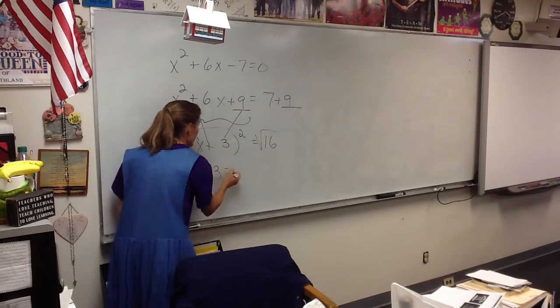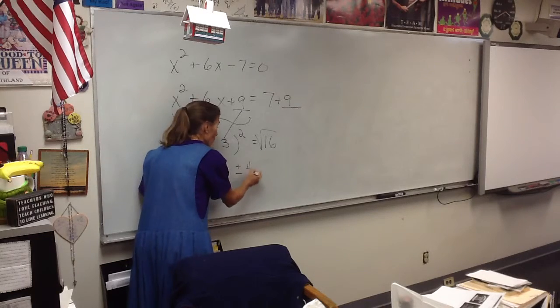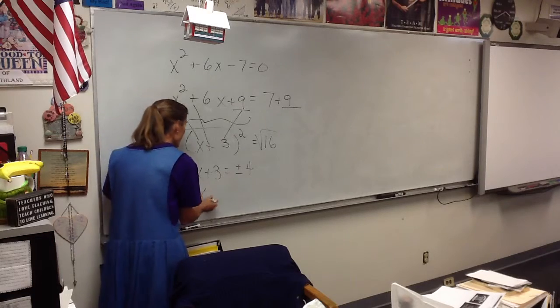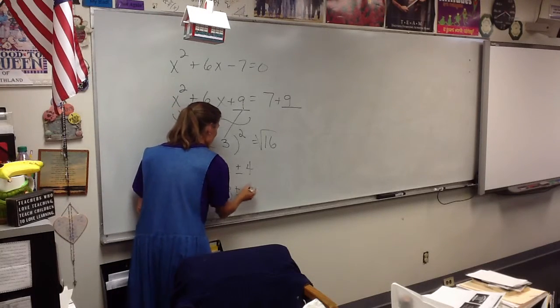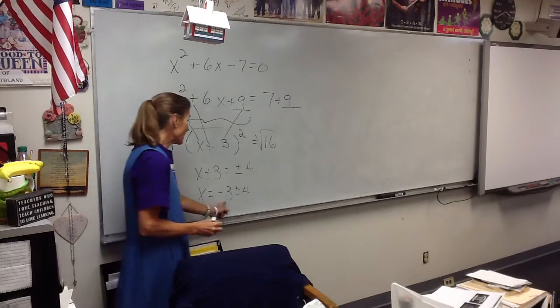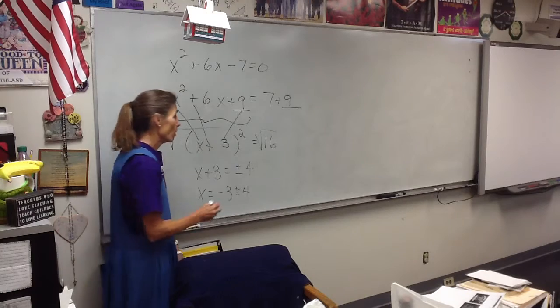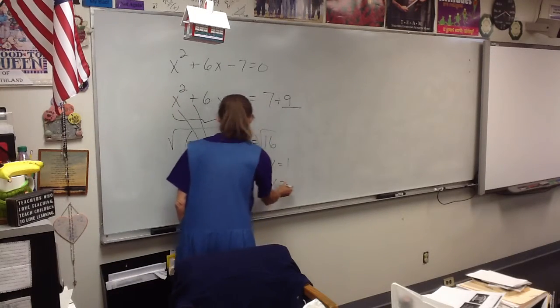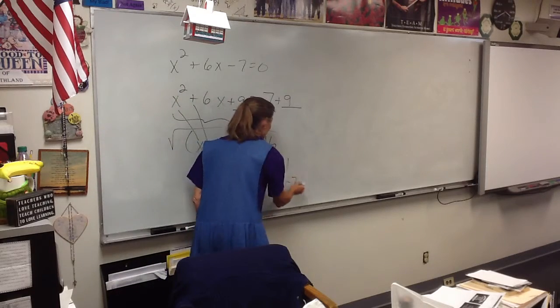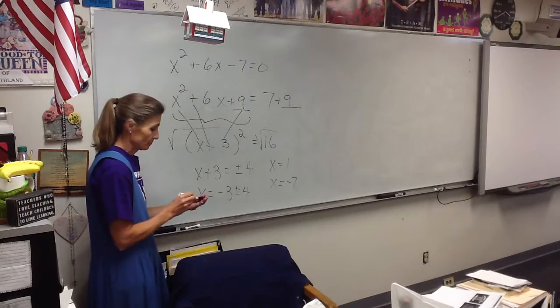So x plus 3 equals plus or minus 4. So x is going to be negative 3 plus or minus 4. Now those add together. What is negative 3 plus 4? 1. What's negative 3 minus 4? Negative 7. So there are the two answers to the question.